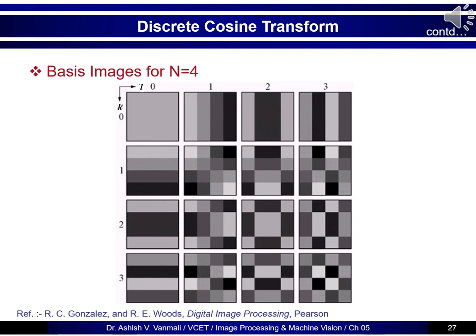The basis images of DCT for N equals 4 are shown here. The first image, the DC term, has equal weight everywhere. As we move away from it, different patterns appear. The first row shows different bar patterns, and the first column shows different row patterns. As you change the position, the pattern keeps changing, with slightly different weights given to different pixels.